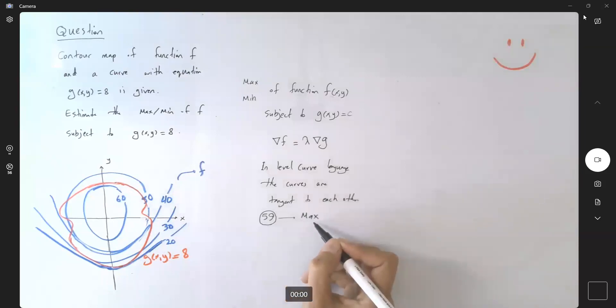So 59 is the answer for the maximum. This is the maximum z value. If your function is written in z equals to f of x and y, the maximum z value is 59. Well, now let's take a look at the minimum value. So the graph of the function takes 20 and at 20, the red and blue graph, they're tangent to each other. Am I right? So you're going to say that, hey, my minimum value for my function f, the z value of function f is 20.